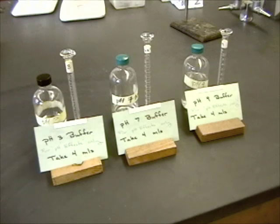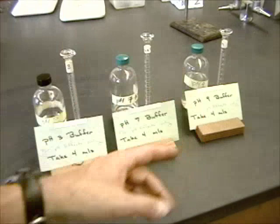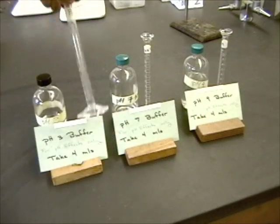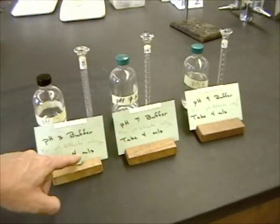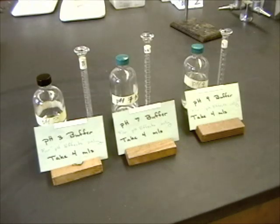The reagents for the pH experiment are stored on the other side of the lab, but it's the same sort of thing. For each of the different pH buffers, there's a dedicated graduated cylinder and a little sign telling you exactly how much you're going to need to complete your experiment.